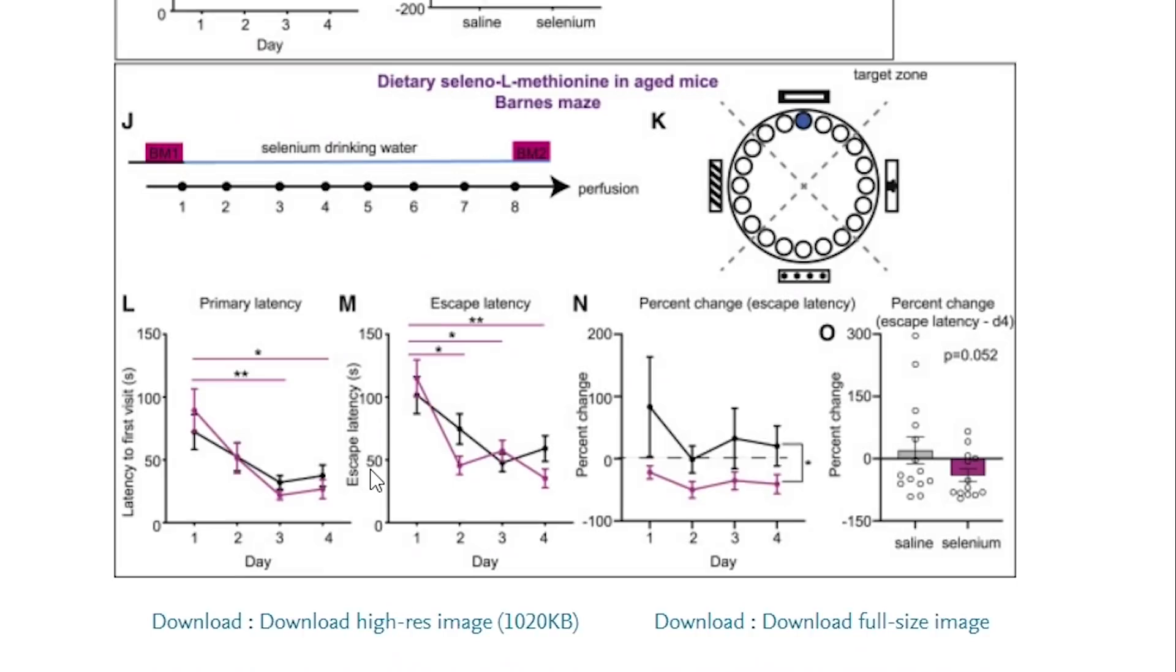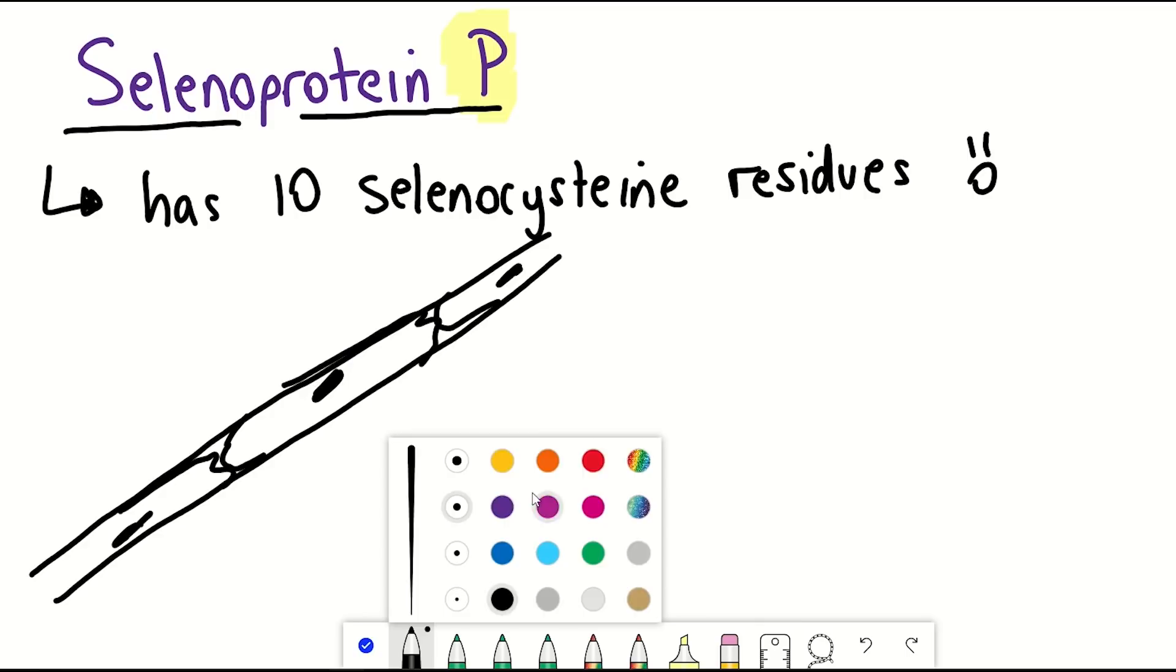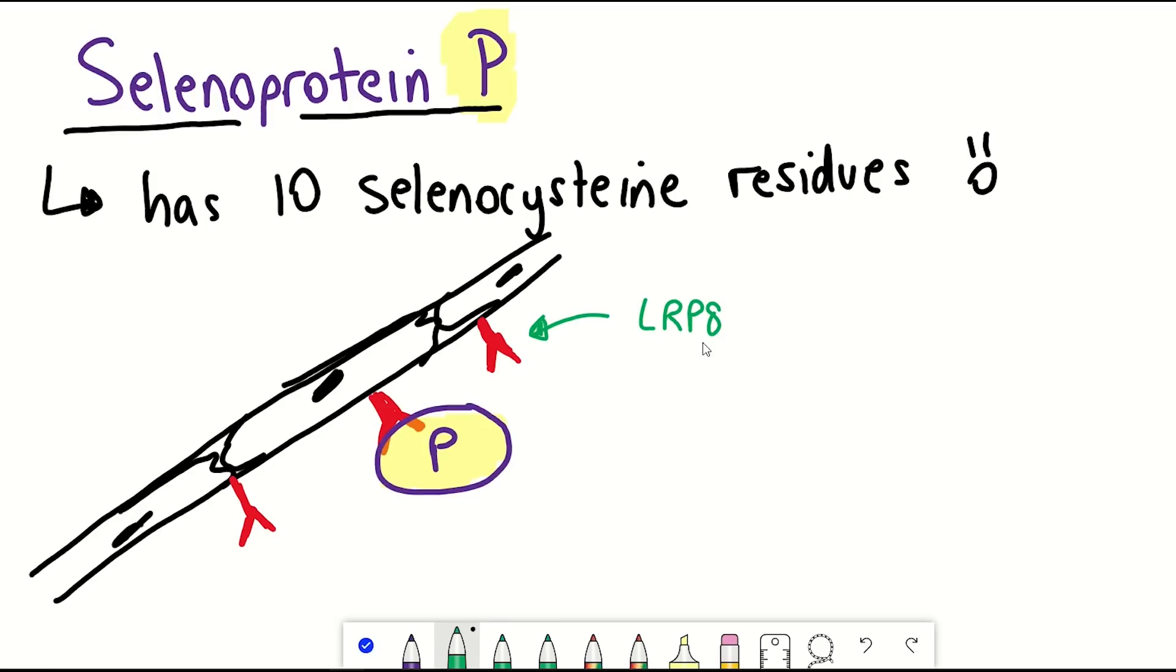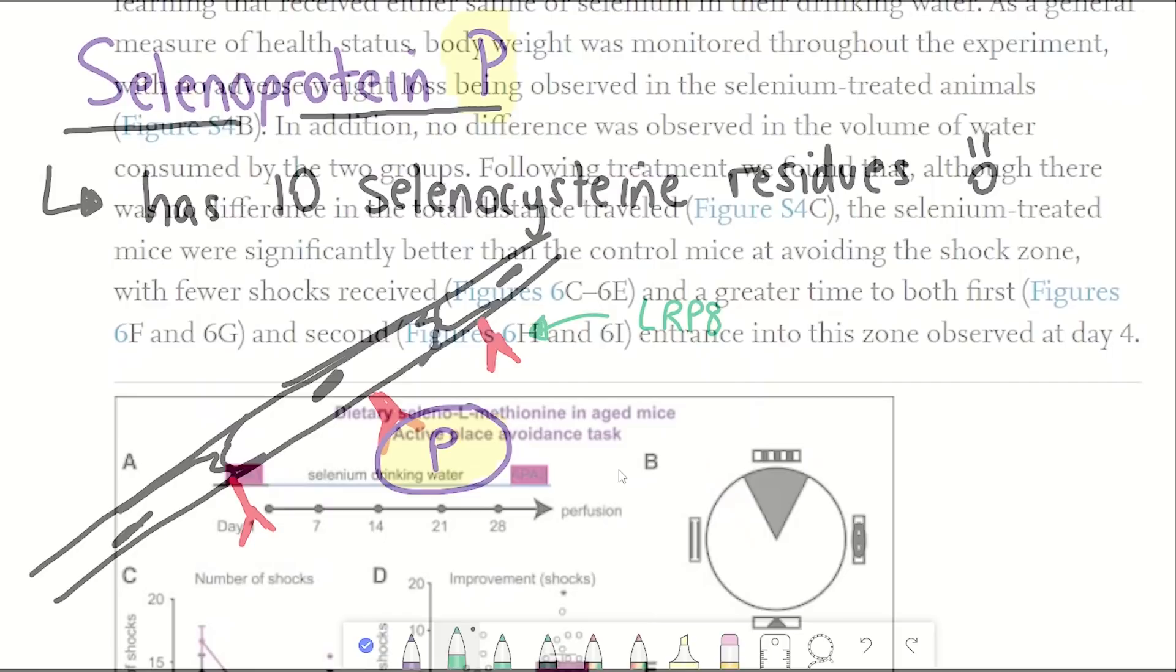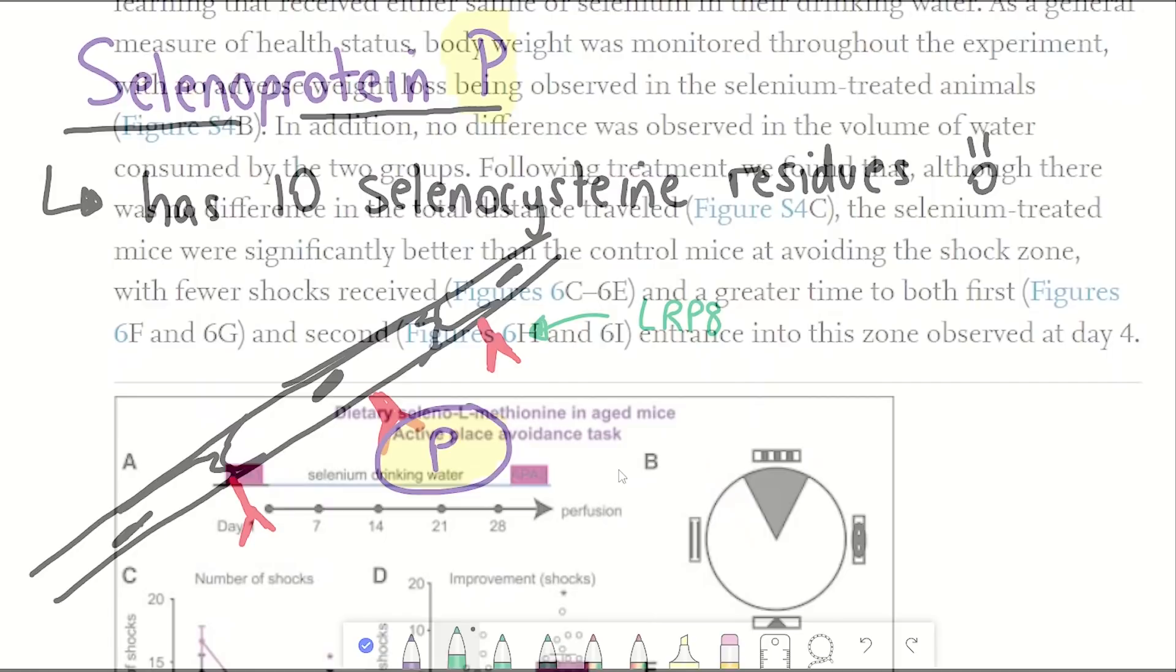So let's come back to selenoprotein P. How would that work? Well, there were receptors on brain capillary endothelial cells called LRP8, which recognise selenoprotein P and aid selenium transport across the blood-brain barrier. Though exactly how this is done seems a little bit unclear to me. But anyway, in line with this idea, mice without LRP8 showed a significant reduction in neurogenesis following exercise compared to the controls.